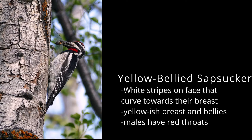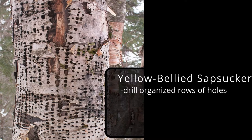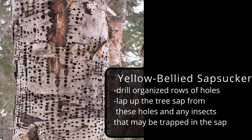The holes they chip out of the tree trunks look quite a bit different from other woodpeckers. Sapsuckers drill organized looking rows of shallow holes. Sap from the cambium then floods the hole and traps insects. They then lap up the drowned insects with their tongues along with the sap.